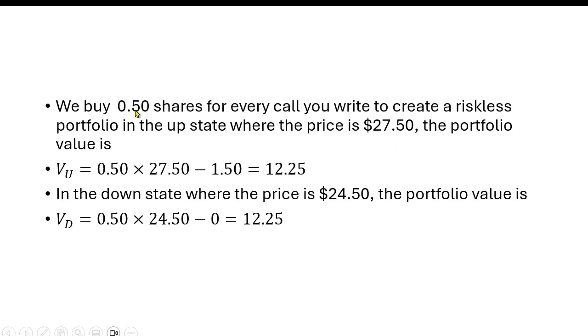So, let's take a look here. What's the value in the upstate? It's the delta times the price of the stock minus the value of the call. Remember, you've written this, so you're going to lose this value. So this is going to be $12.25. In the downstate, it's going to be exactly the same. So we've solved delta correctly.